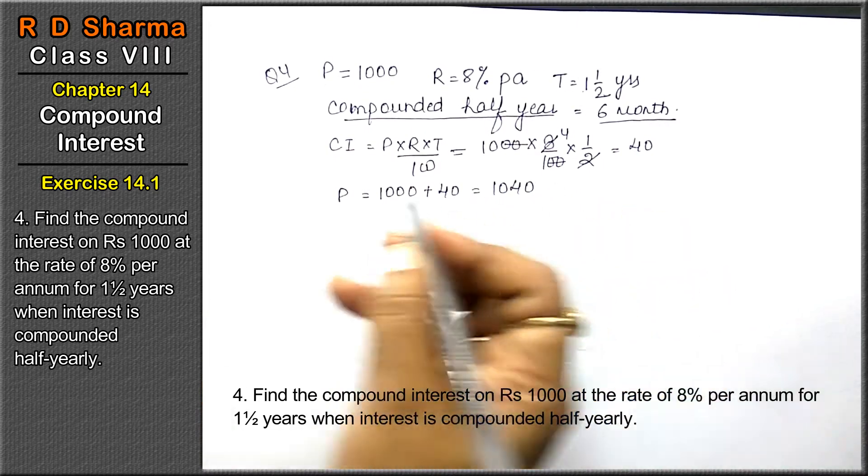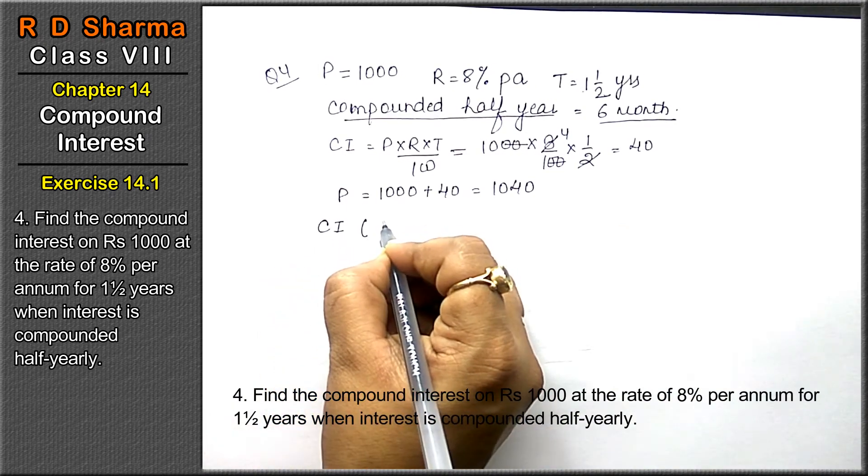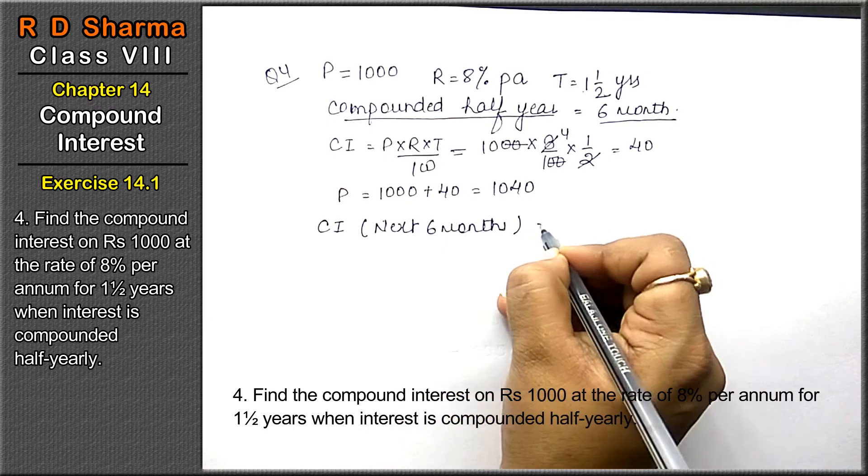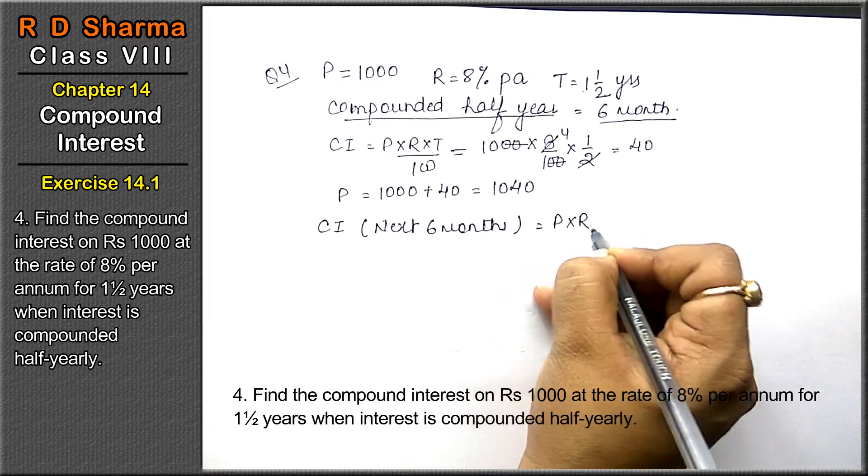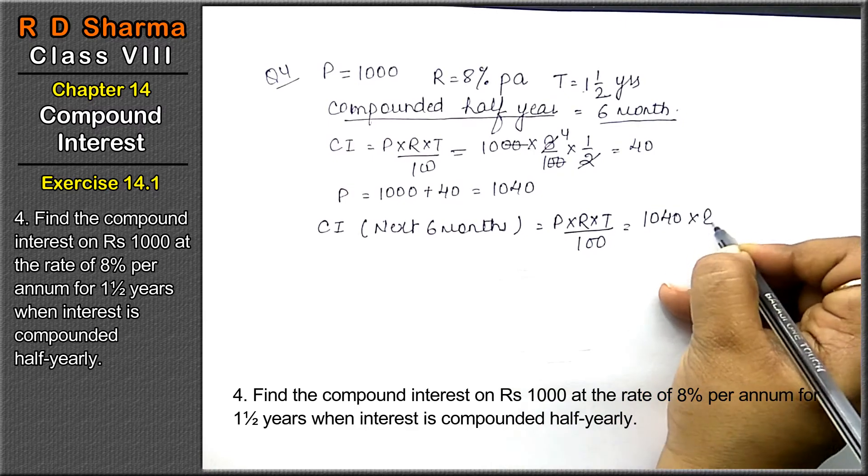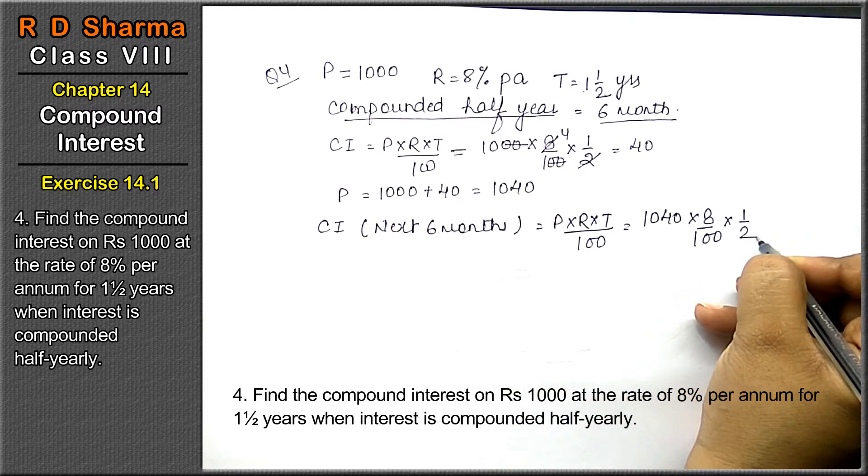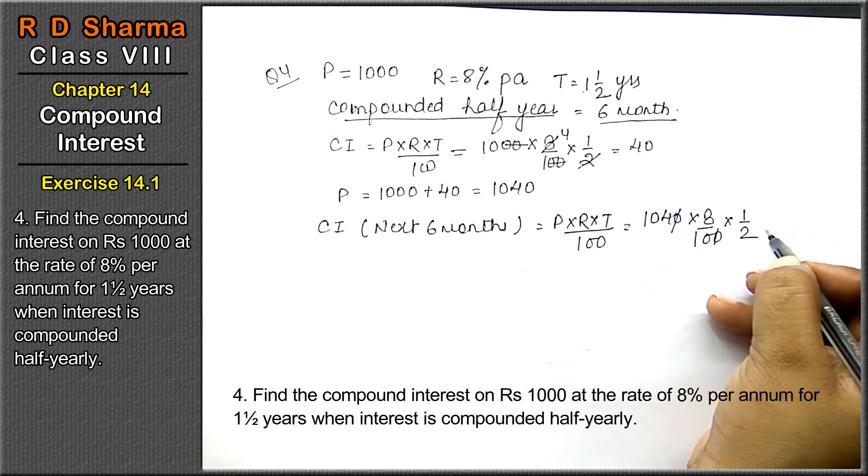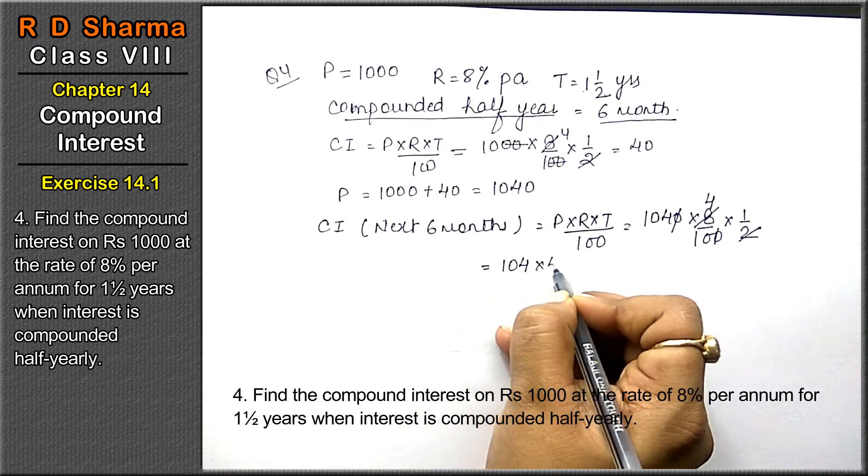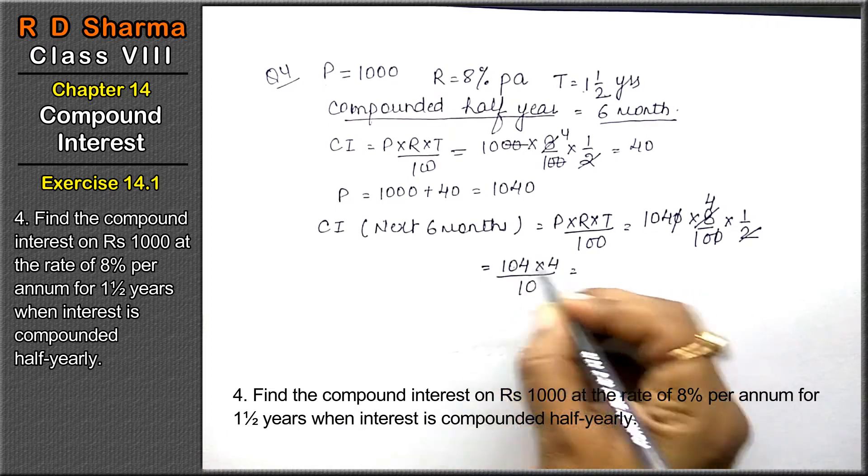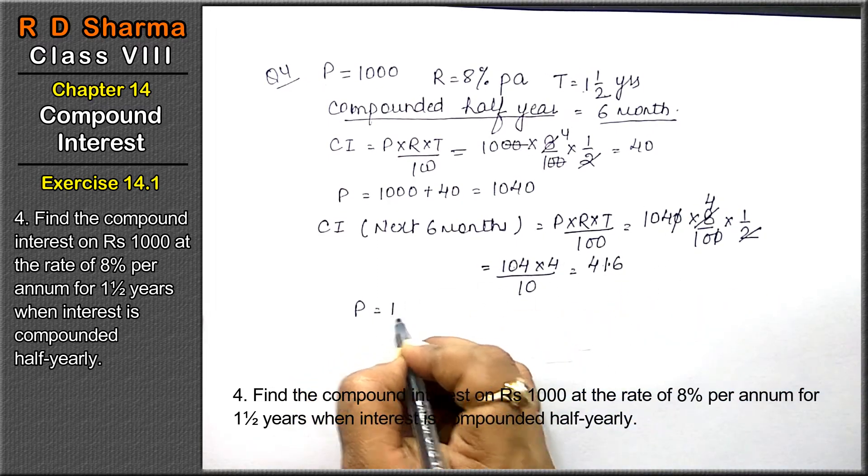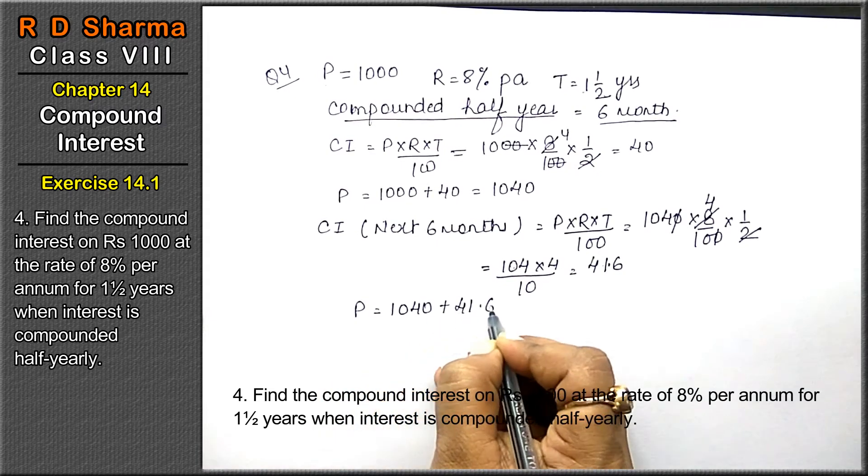Compound interest for next 6 months equals to P into R into T upon 100. P is 1040, R is 8%, T is 1/2. The calculation comes to 1040 into 4 upon 10, that means 41.6.